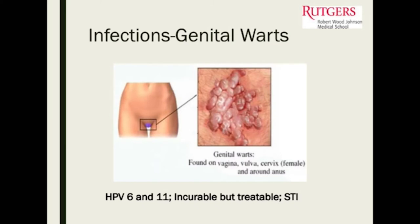Sometimes genital warts can present with pelvic pain — more directed in the vulvovaginal area. These are what genital warts can look like, related to HPV 6 and 11. It's an incurable but treatable sexually transmitted infection. Our HPV vaccine is important because it covers the two most common causes of genital warts.